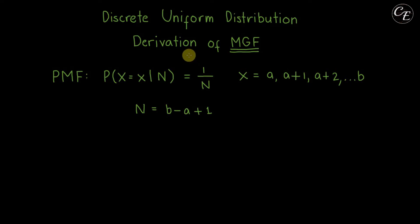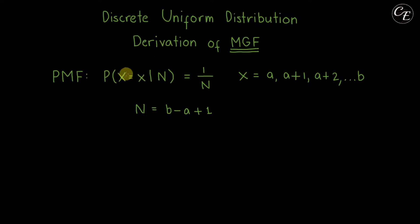Hello everyone. In this video I'm going to show you how to derive the moment generating function, or MGF, for the discrete uniform distribution. In the derivation process we're going to use the probability mass function, or PMF, for this distribution, which is one over n, where n is a constant. The random variable for this distribution has integer values from a to b.